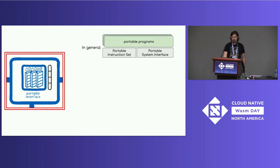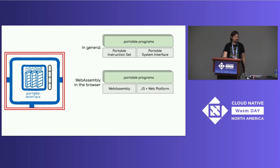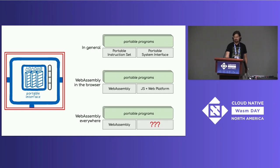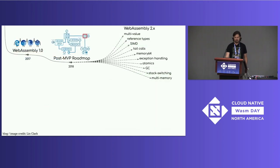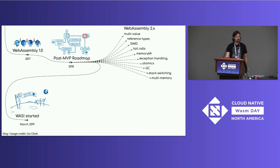In general, if we want to have portable programs, we need a portable instruction set and a portable system interface. In the browser, WebAssembly is designed to be that portable instruction set, and JavaScript and the web platform are a natural portable system interface. But if we want to run WebAssembly everywhere, what takes that role when we don't necessarily have JavaScript or the web platform? To answer this question, we started the WASI subgroup — WASI standing for WebAssembly System Interface.